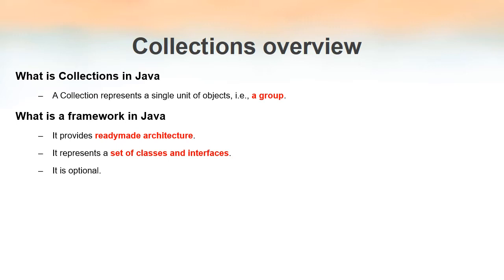So what is a framework? A framework means it provides ready-made architecture and it represents a set of classes and interfaces. If you want to call something a framework it must contain a set of classes and interfaces. Moreover, in Java it is optional — it is not compulsory that every program in Java must make use of this framework.